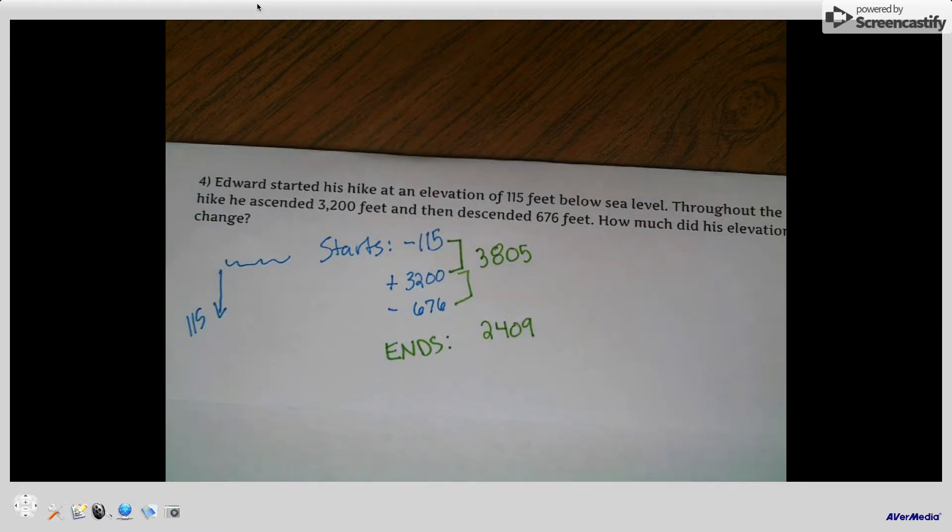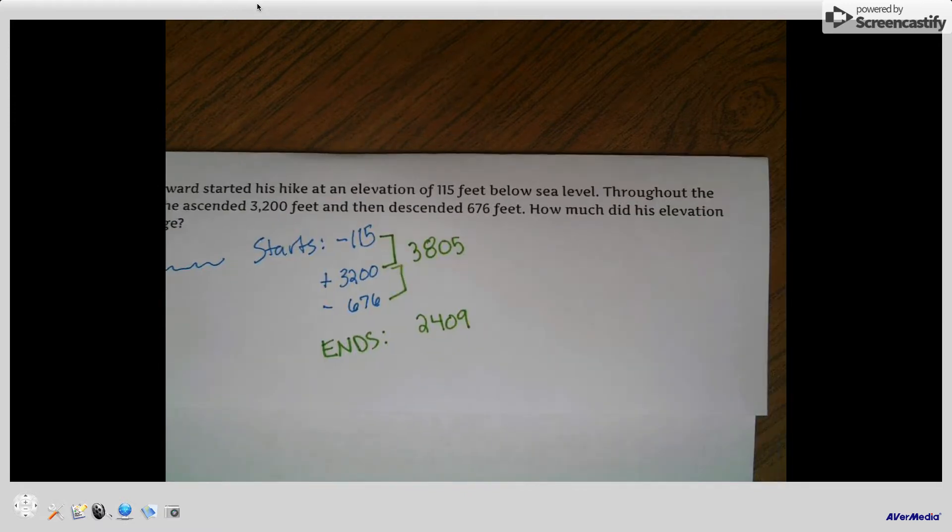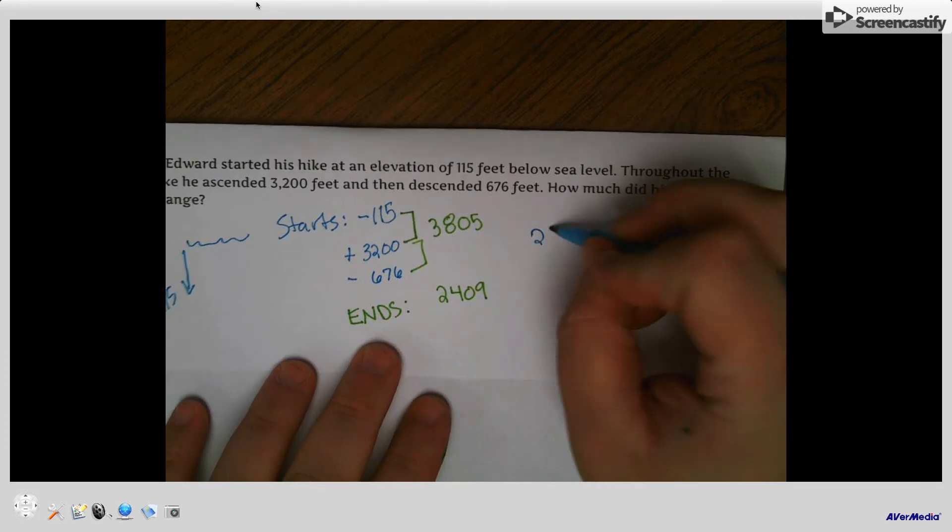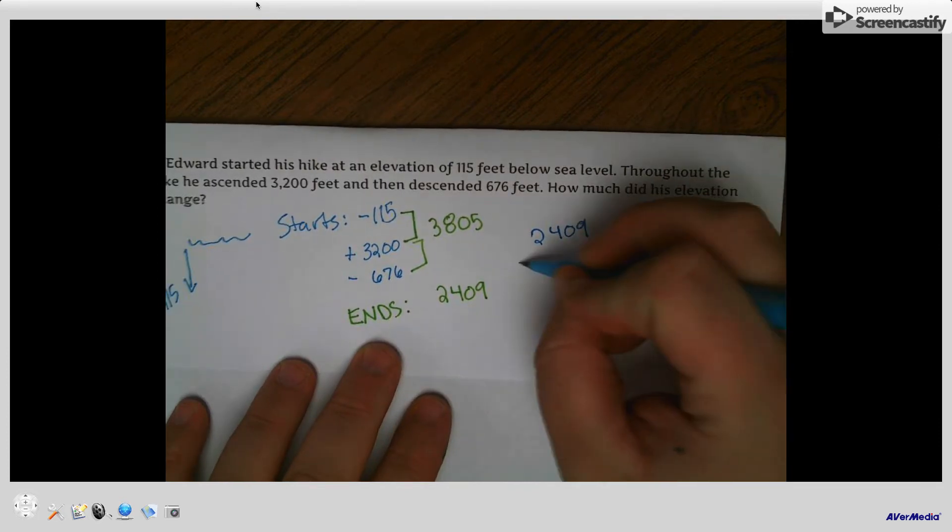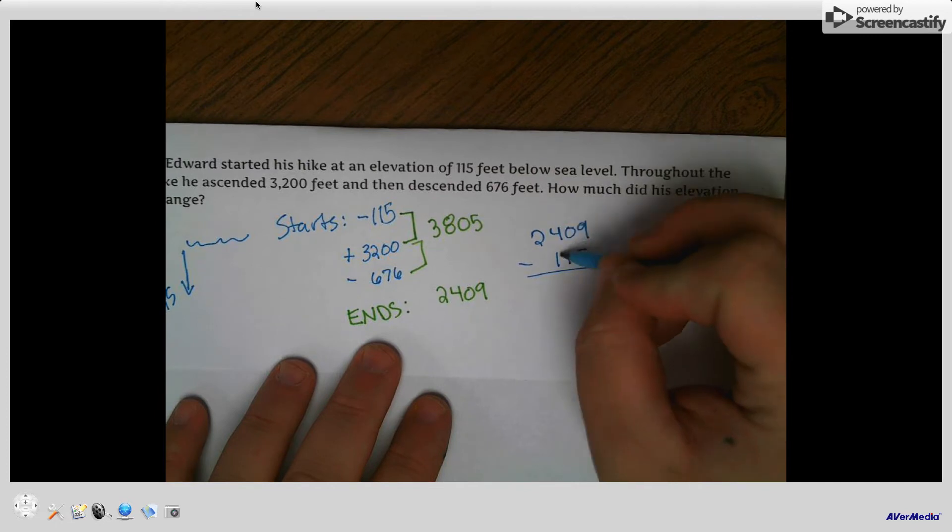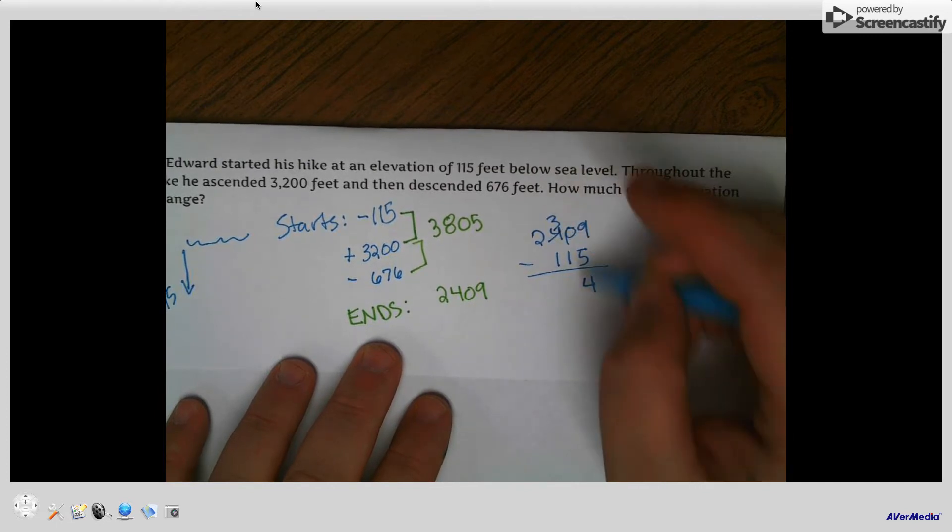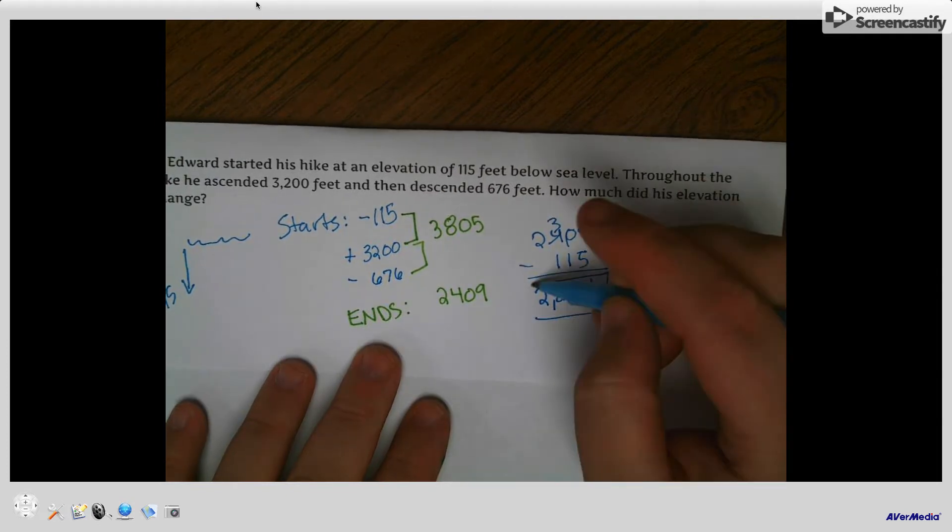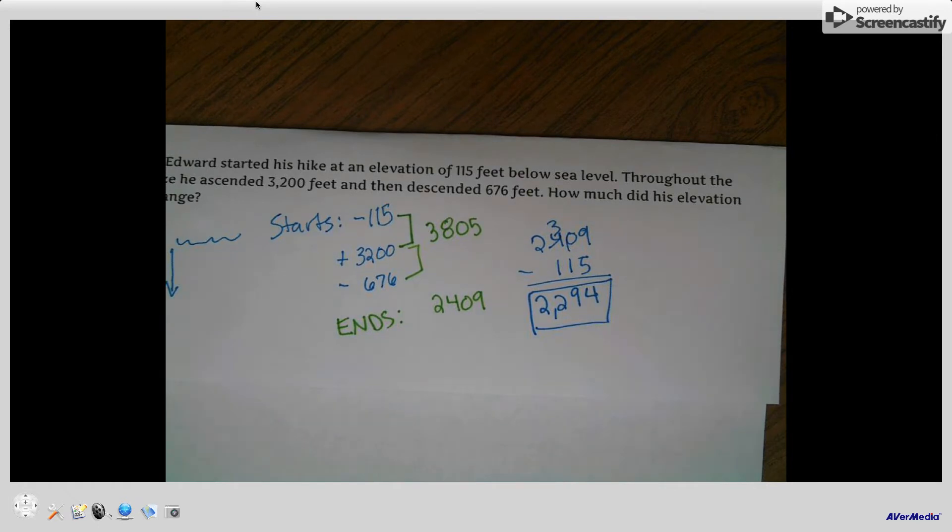But it wants to know how much his elevation changed. So we have to take that where he's at now. We're going to subtract his 115. And so his new finishing elevation is 2,294 feet, okay? That's how much of a change there was from start to end.